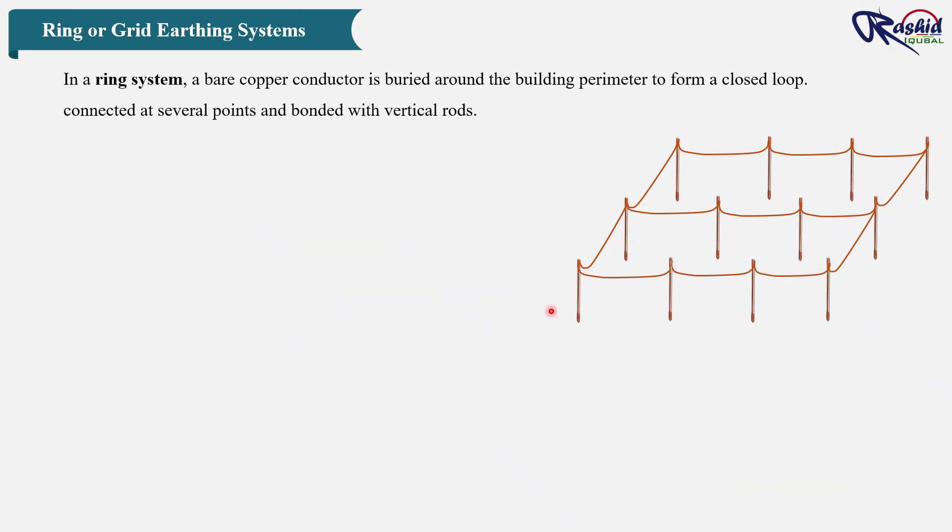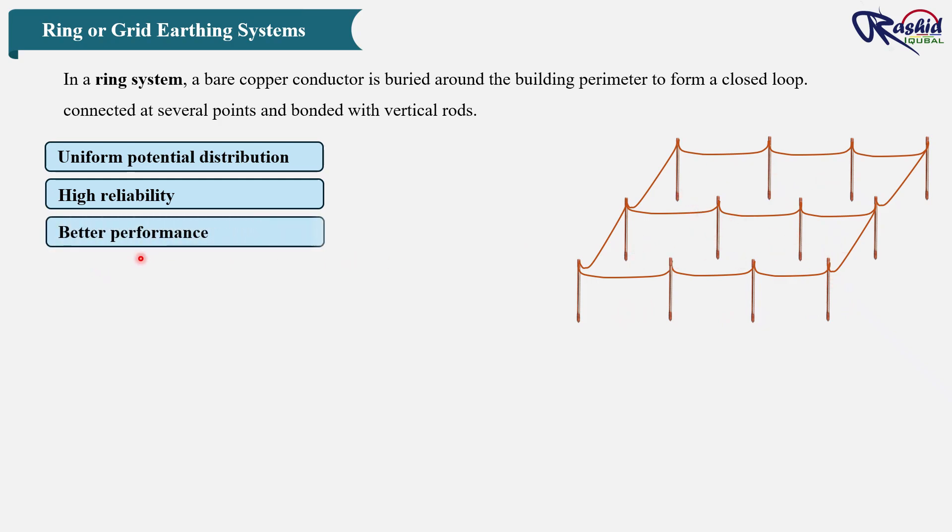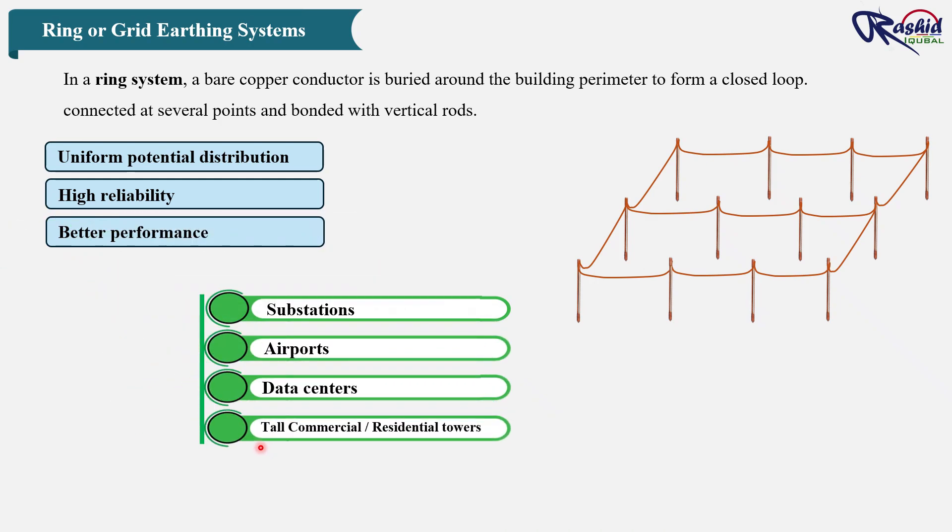This system offers three key benefits: uniform potential distribution, high reliability since multiple parallel paths are available for current flow, and better performance, especially in those areas where soil resistivity is high. That's why ring or grid systems are widely used in substations, airports, data centers, and tall commercial towers where reliability and safety are critical.